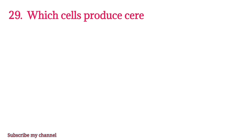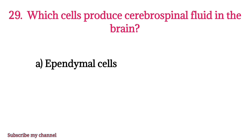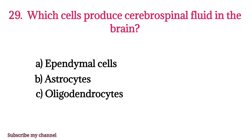MCQ number twenty-nine: Which cells produce cerebrospinal fluid in the brain? Option A: ependymal cells, option B: astrocytes, option C: oligodendrocytes, option D: microglia. The right option is option A.